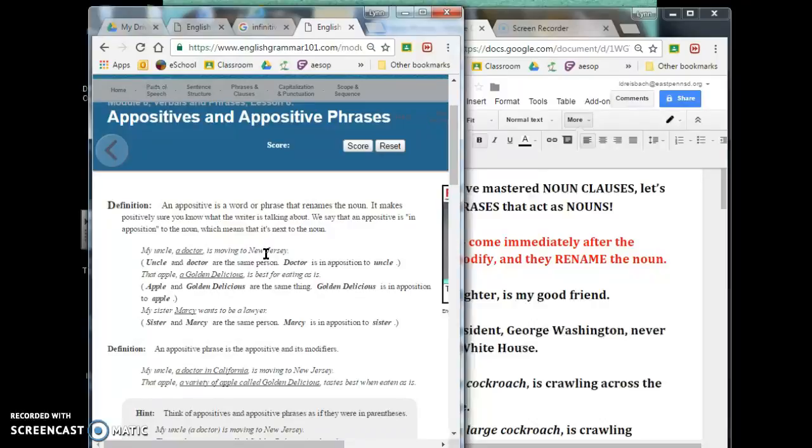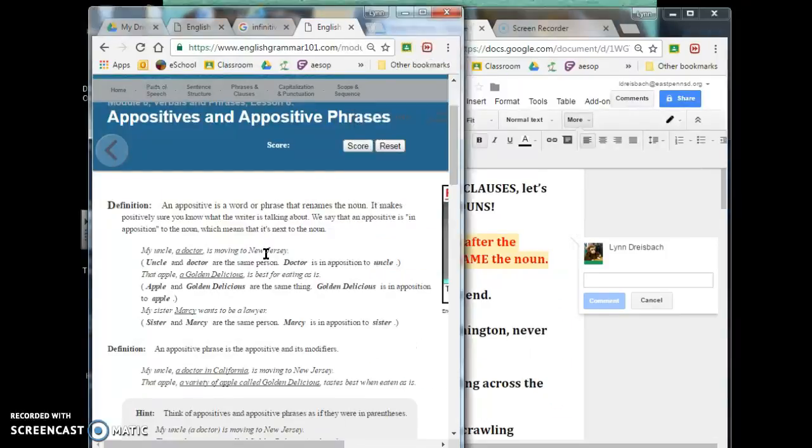An appositive phrase is going to have more than just one word. It'll have maybe some adjectives. So here this is an example of an appositive phrase. My uncle a doctor in California is moving to New Jersey. This is an appositive phrase because it's not only that he's a doctor but it includes the prepositional phrase in California to complete the thought. Still you would be able to switch out my uncle is moving to New Jersey with a doctor in California is moving to New Jersey.